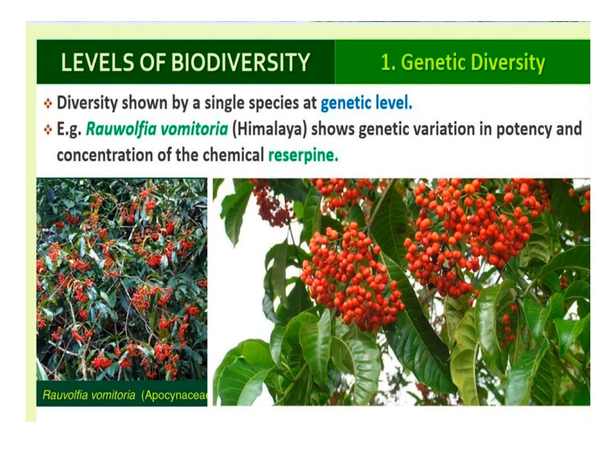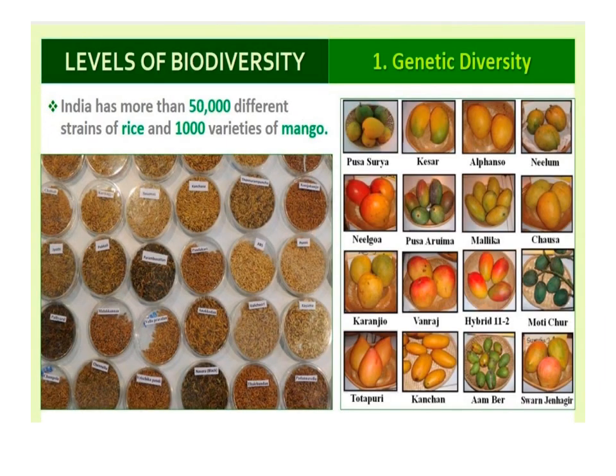Genetic diversity is the variation in the genes and their alleles in the same species. For example, the medicinal plant Rauwolfia vomitoria, growing in different Himalayan ranges, shows genetic variation in terms of potency and concentration of the active chemical reserpine that the plant produces. There are more than 50,000 genetically different strains of rice and 1,000 varieties of mango in India.